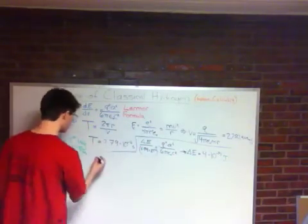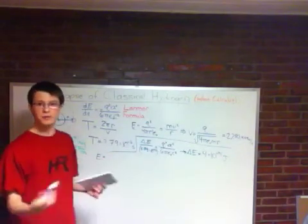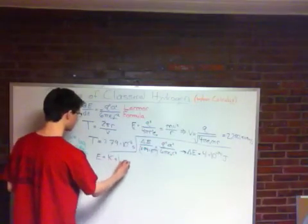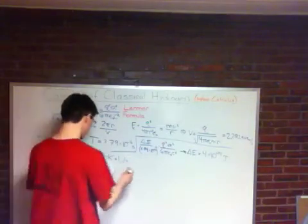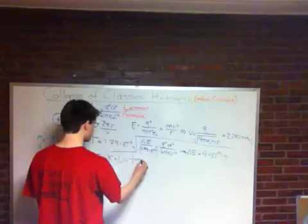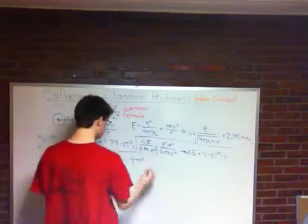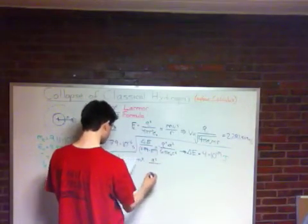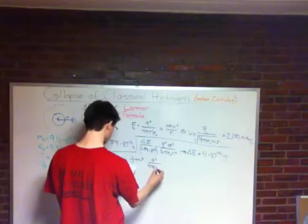Now, its total energy, which we're going to call E, is equal to the sum of the kinetic energy and the potential energy. So that's going to be K plus U. K is going to be equal to 1 half mv squared, and U is going to be the Coulomb potential. So that's going to be minus Q squared divided by 4 pi epsilon naught R.